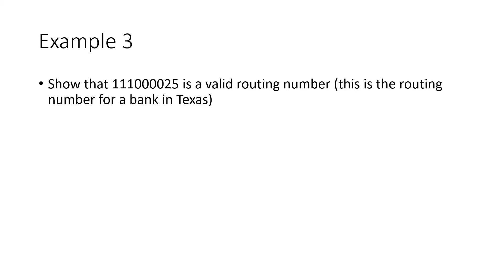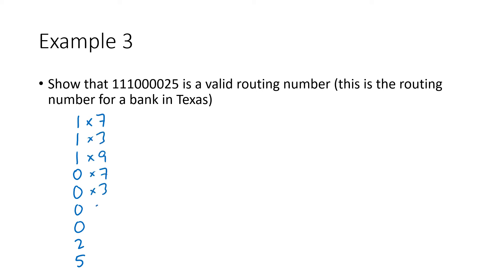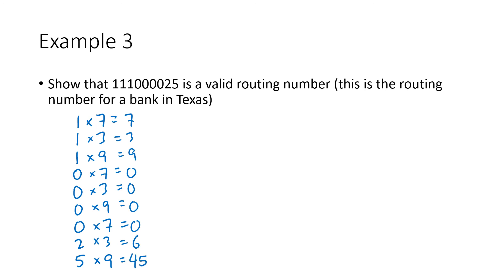Let's look at the routing number 111000025. We write down the digits and apply the weight pattern 7, 3, 9, 7, 3, 9, 7, 3, 9. The products are: 1×7=7, 1×3=3, 1×9=9, then four zeros, then 2×3=6, and 5×9=45.